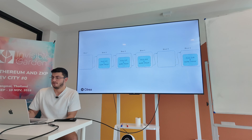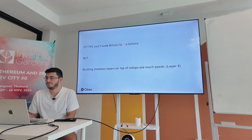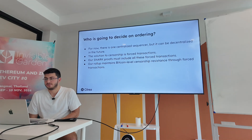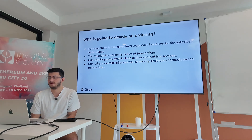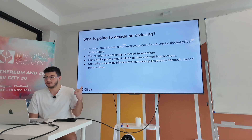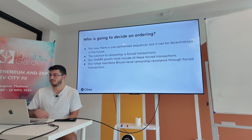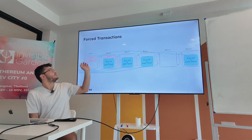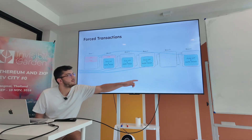207 TPS won't scale to billions, but we can build stateless layers on top of this rollup — for example, Intmax. For ordering, we'll start with a centralized sequencer but it can be decentralized in the future. The solution for a centralized sequencer is forced transactions. This is easy in Ethereum rollups but can also be implemented in Bitcoin rollups. With this, our SNARK proofs must include all forced transactions, so our rollup maintains Bitcoin-level censorship resistance through forced transactions.